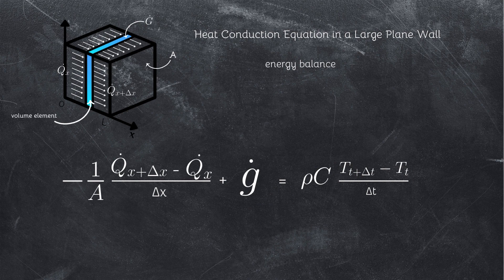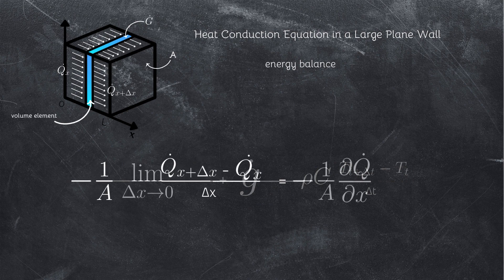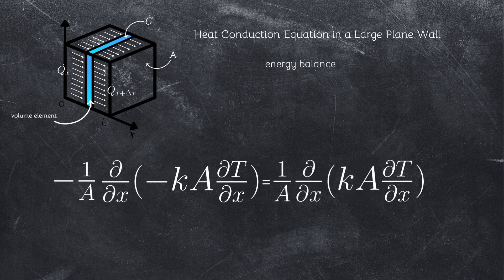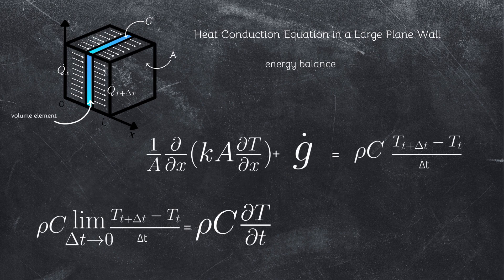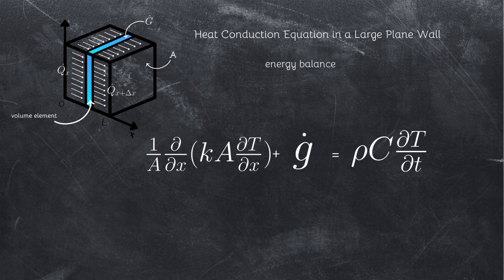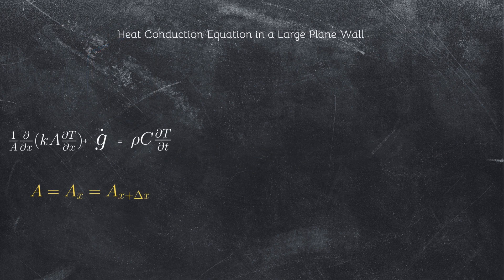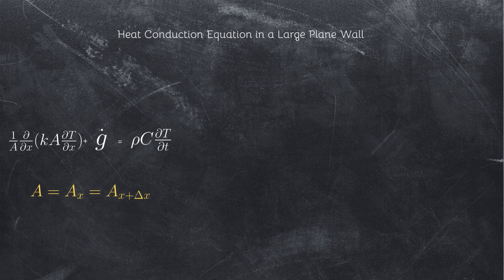Dividing by A delta x, since from the definition of the derivative and Fourier's law of heat conduction, and taking the limit as delta x and delta t go to zero, yields this form of the energy balance. Noting that the area A is constant for a plane wall, the one-dimensional transient heat conduction equation in a plane wall for variable conductivity becomes...